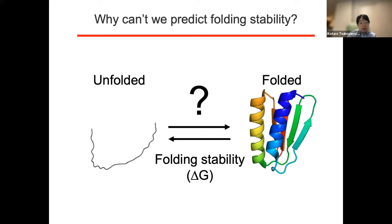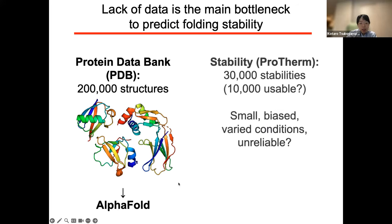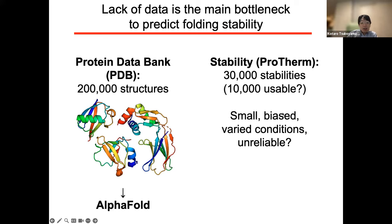So the question is: why can't we predict folding stability very accurately? The short answer is we don't have any good dataset on folding stability. For example, DeepMind utilized the Protein Data Bank (PDB), which includes around 200,000 structures, to construct the deep learning AlphaFold prediction model. Of course, there is a database on stability called ProTherm, but it only includes around 30,000 stabilities — somewhat smaller than PDB. Also, the database is somewhat biased: most of the data is the folding stability change when replacing the wild-type amino acid with alanine, derived from alanine scanning. The experimental conditions are totally different from paper to paper — pH, ion concentration, temperature, or denaturant — making it difficult to handle the dataset in a unified way. So the database on folding stability is somewhat unreliable compared to PDB.